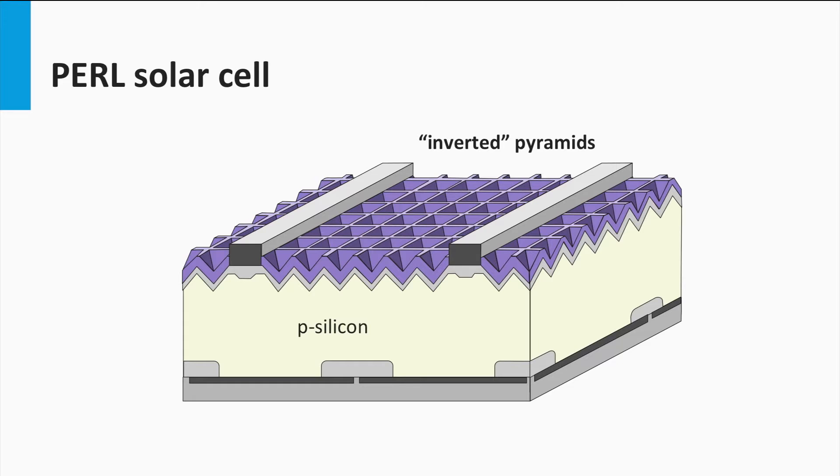Secondly, the inverted pyramid structures are covered by a double layer anti-reflection coating, which results in an extremely low top surface reflection. Often a double layer coating of magnesium fluoride and zinc sulfide is used as an anti-reflection coating.